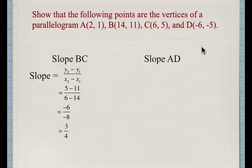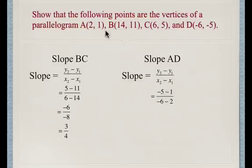For AD, we're going to allow the D to be the second point, so it would be negative 5 take away 1, and negative 6 take away 2. And when we subtract these, and watch your signs, ends up being, again, negative 6 over negative 8, which also reduces to 3 over 4.